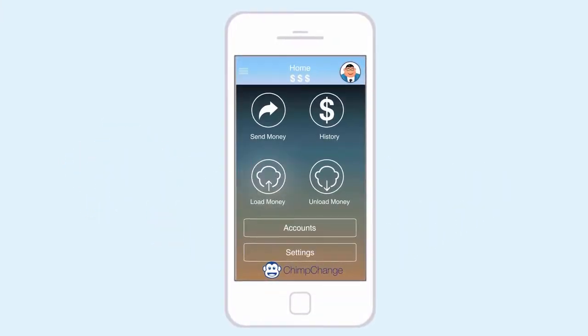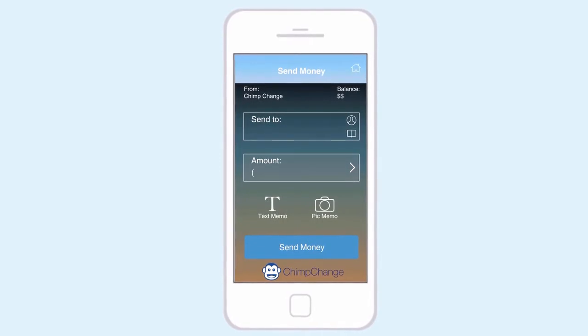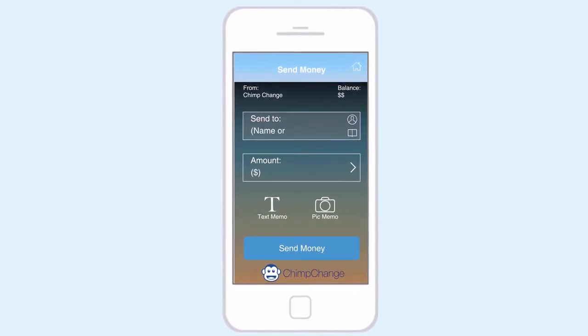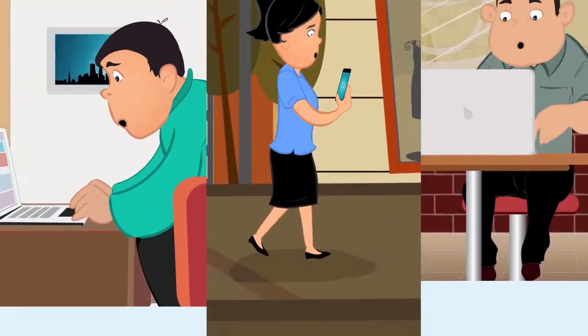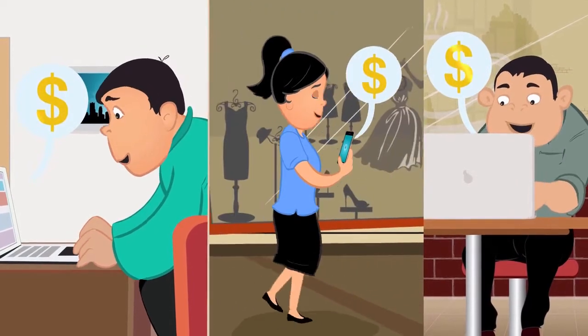Chimp Change. It's simple. Deposit money into a Chimp Change business account. Then, enter how much you want to send to each recipient. You only need their phone numbers. Then, bam, money is now available. They're paid.